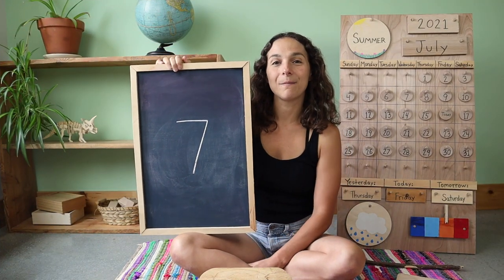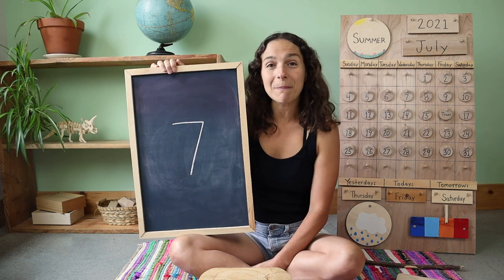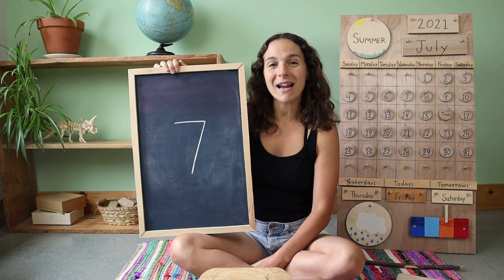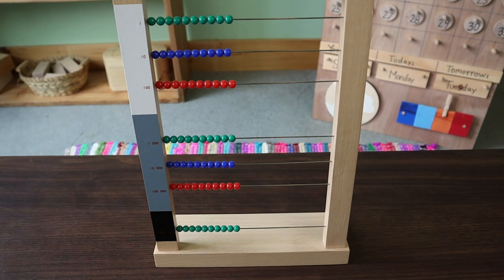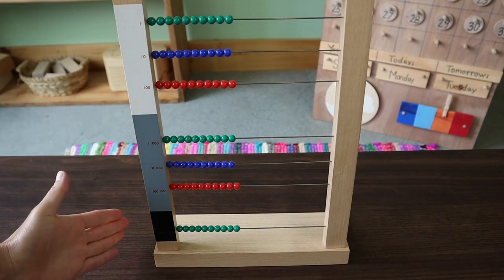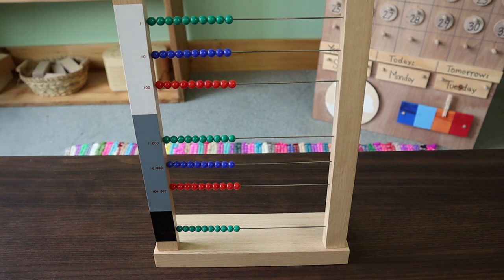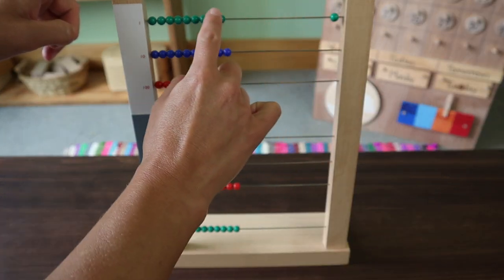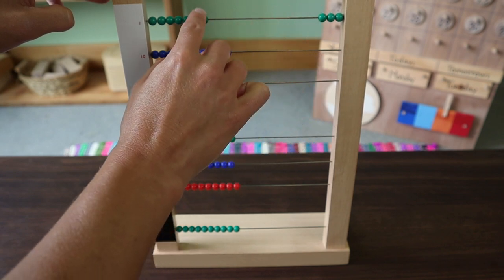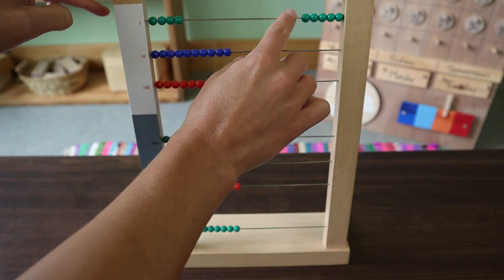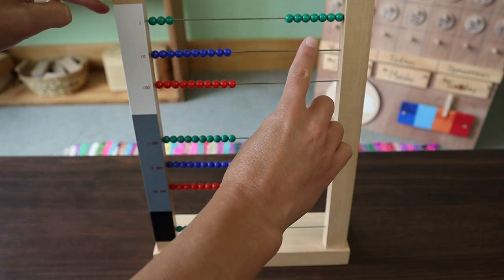And here is the number of the week. What number have we been talking about this week, friends? Do you remember? Seven. That's right. Now let's hold up seven fingers together, just like we did for the Days of the Week song. We start with one hand — five fingers — and two more make seven. Seven fingers. Now let's count to the number seven together using the large bead frame. We are going to be counting the green beads, which are the units at the top. Let's count seven units together: one, two, three, four, five, six, seven. Seven units.